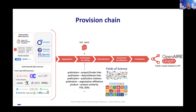We bring together all citations to the same object across different sources — for example, an arXiv version and a published version with a DOI, or PubMed and a published version. Then we enrich by inference: propagation of data from one object to another through relationships. This is typical of ORCID identifiers that can migrate from a publication object to a data object when they share a 'supplemented by' relationship or common authors. We exploit the topology of the graph to propagate information from one node to its neighbors.